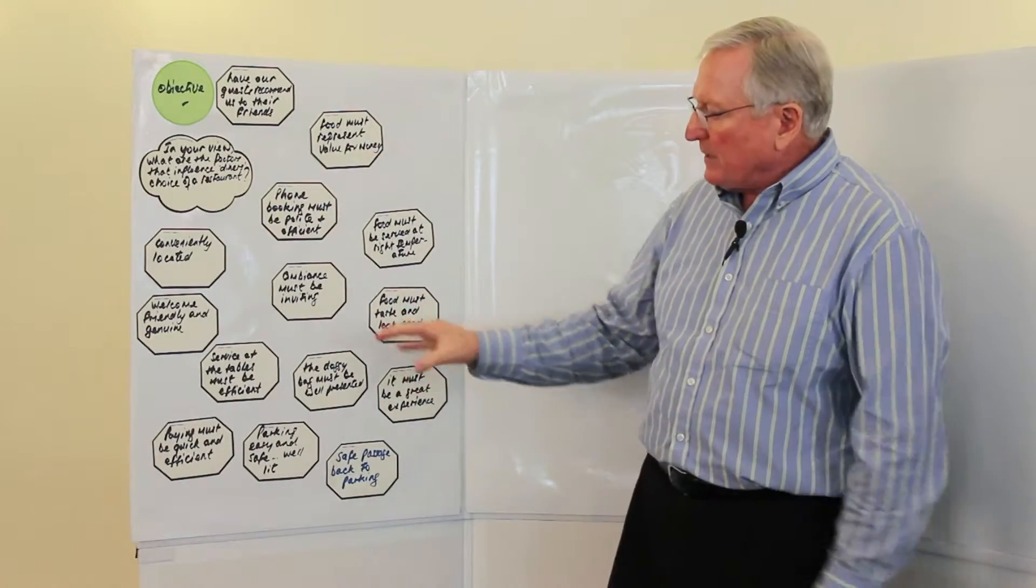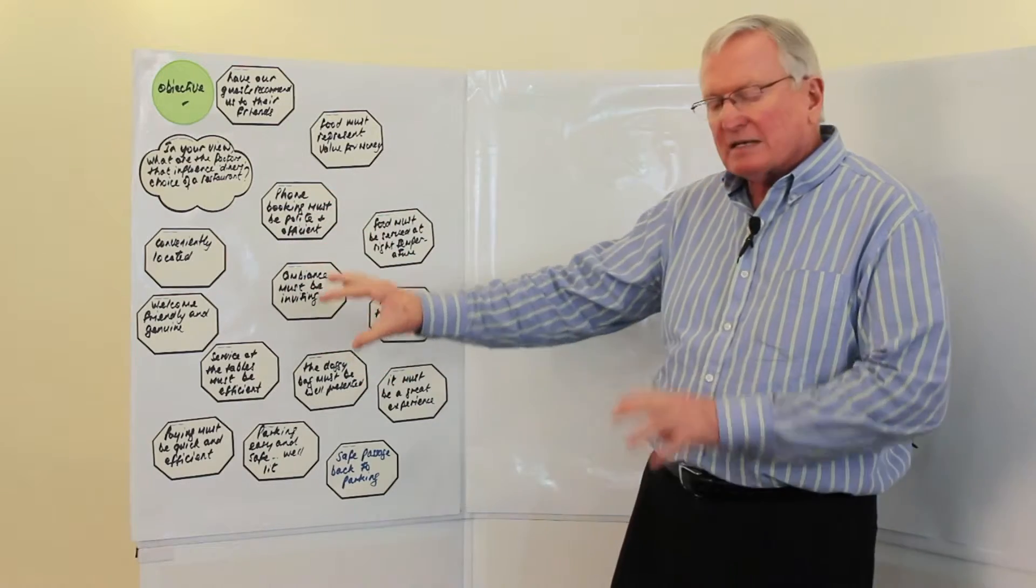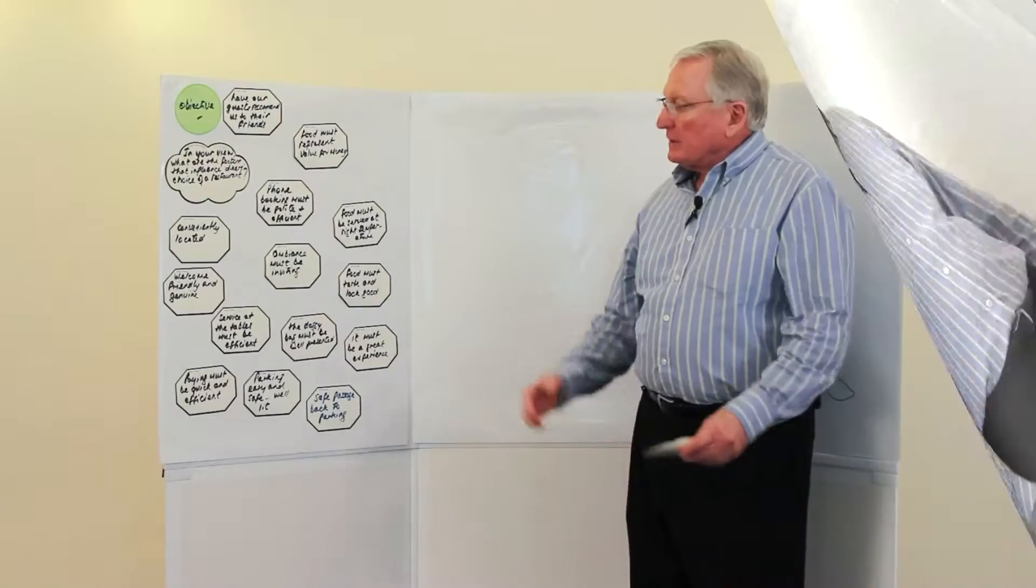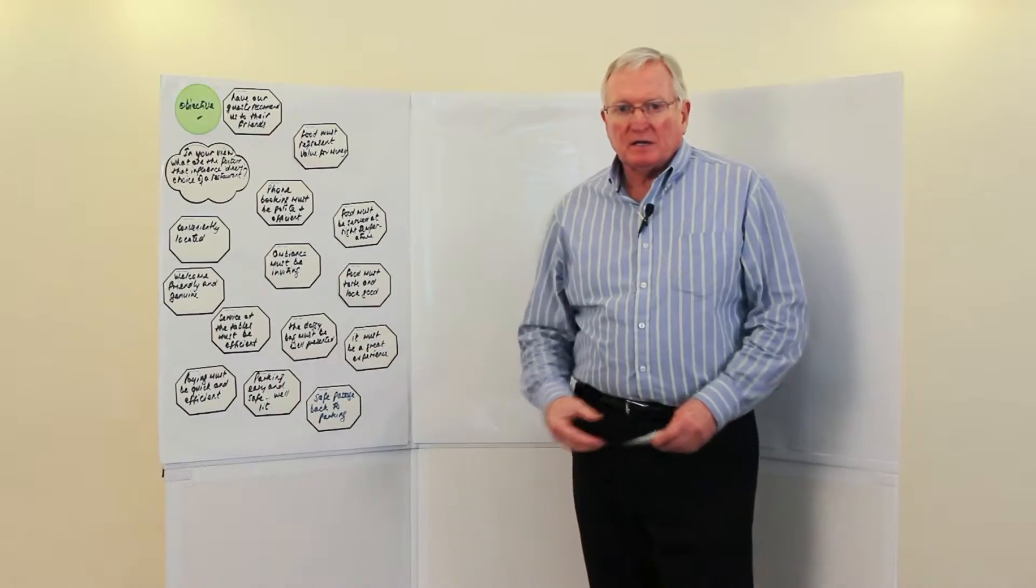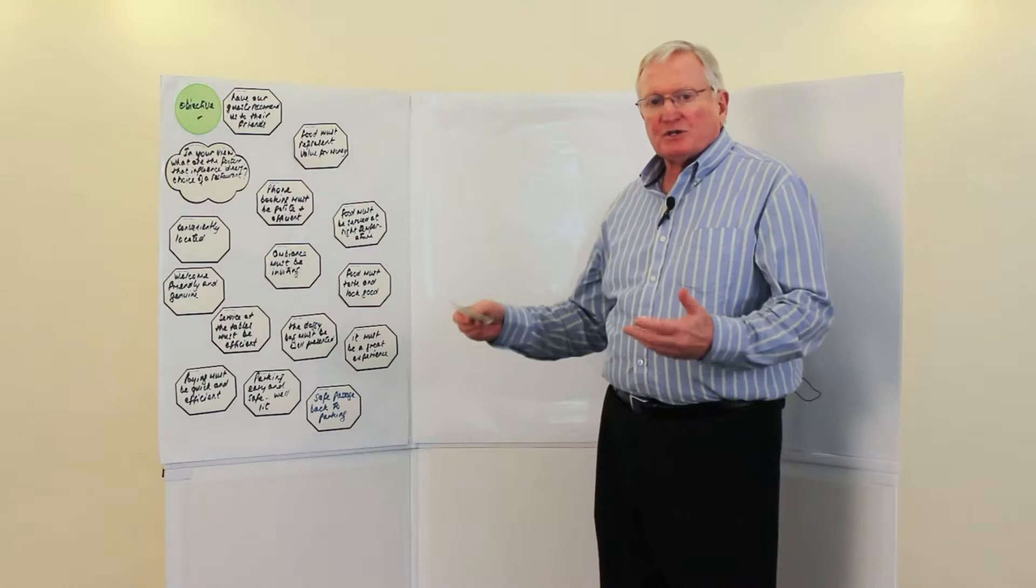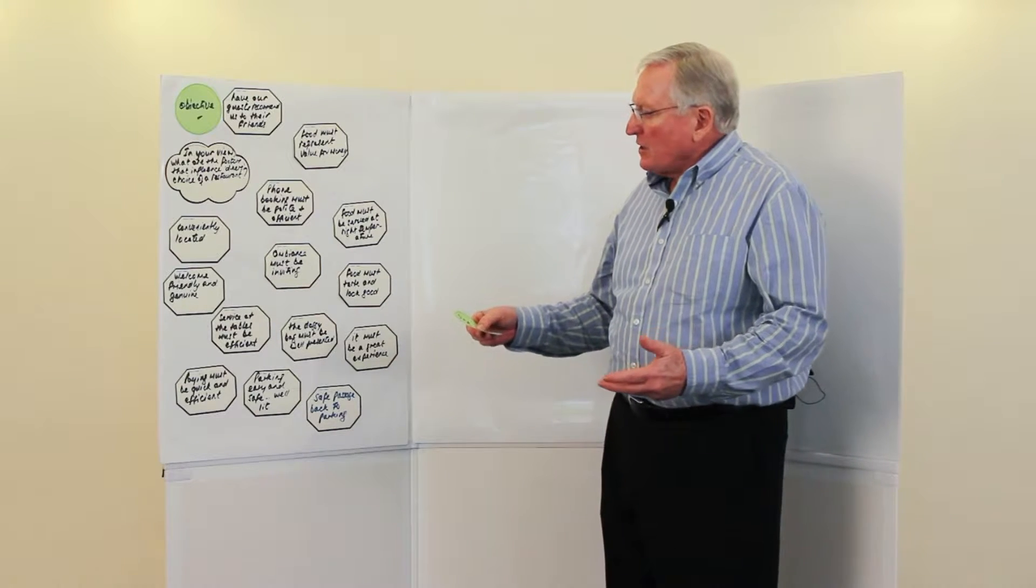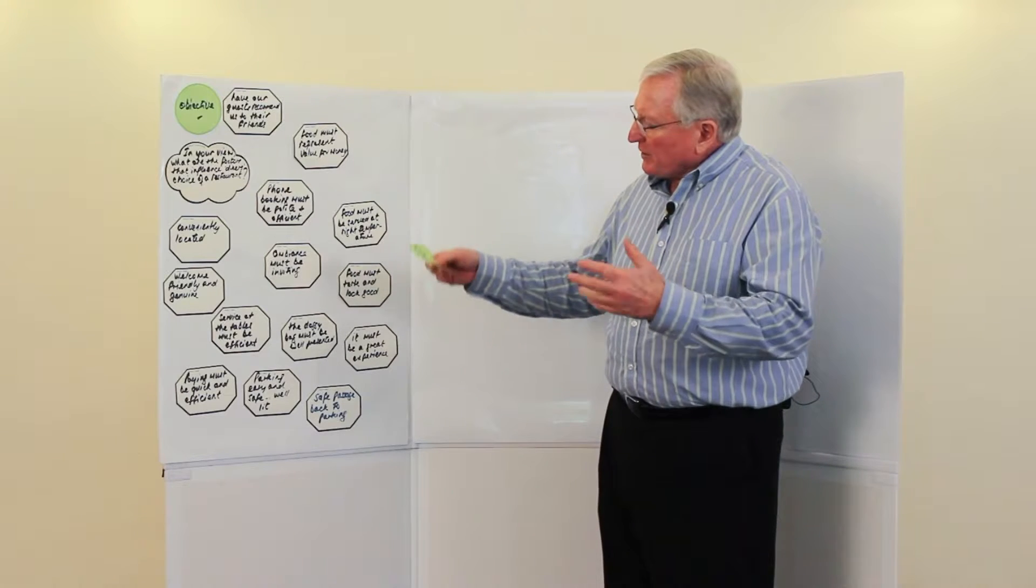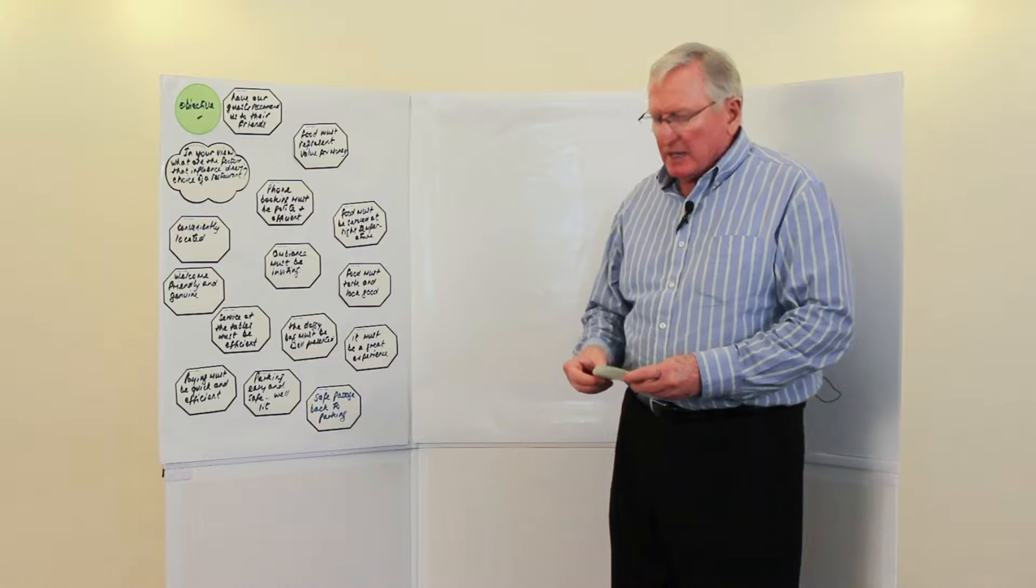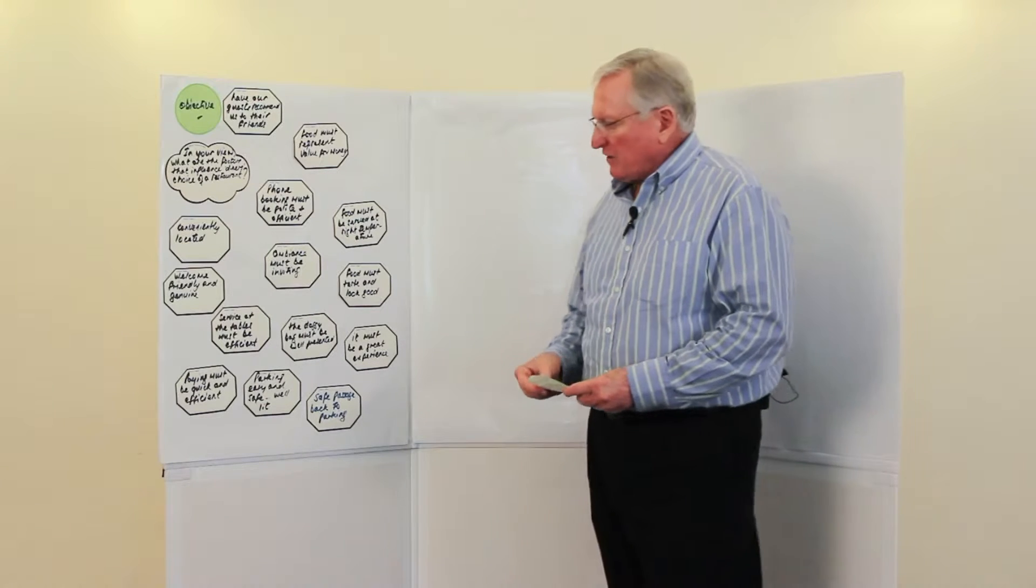The next step is to say, right, what is this telling us and how do we rework this information that makes it more usable? So now having got all of the ideas out, we would now start to debate them. And the kinds of questions we'd be asking ourselves is, what are the themes that are coming out of here? And what would naturally flow out of this is that there are three stages of a meal.